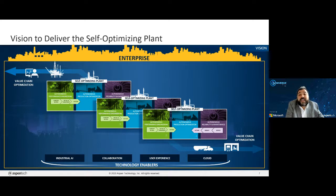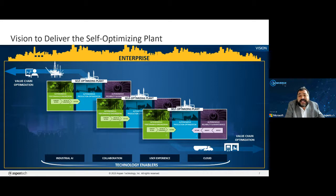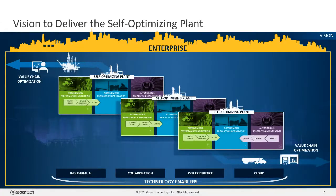The enterprise value chain will become self-optimizing, balancing supply and demand across multiple plants for maximum results. The technology enablers that will drive this level of autonomy will be four areas: industrial AI providing insights, guidance, and automation; collaboration breaking down silos and connecting workflows across functions; user experience that simplifies the experience for non-experts through design and automation; and cloud, providing flexible deployment options that meet your needs now and in the future.